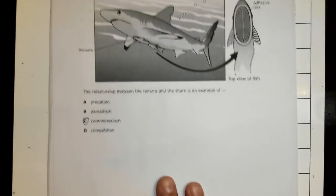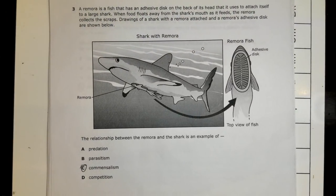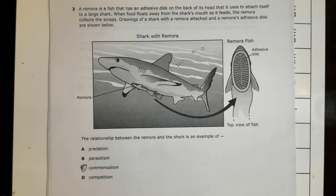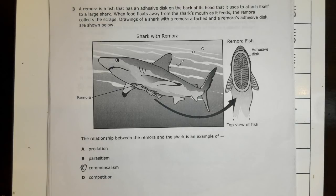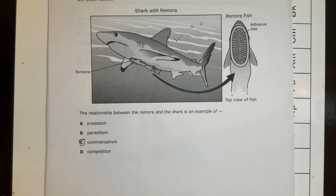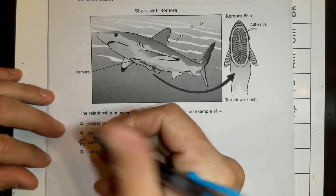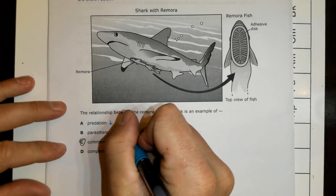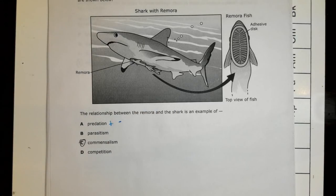Question number three. A remora is a fish with an adhesive disc on the back of its head that it uses to attach itself to a large shark. When food floats away from the shark's mouth as it feeds, the remora collects the scraps. That paragraph explains the relationship between the shark and the remora fish. Let's break down the relationships we have when we talk about ecological relationships.